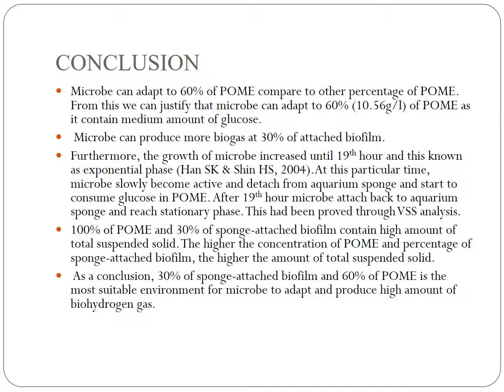As a conclusion, 30% sponge-attached biofilm and 60% POME is the most suitable environment for microbes to adapt and produce a high amount of biohydrogen gas. Microbes can adapt to 60% POME as it contains a medium amount of glucose, and microbes produce more biogas at 30% attached biofilm. The growth of microbes increased until the 19th hour, known as the exponential phase, after which microbes attach back to the aquarium sponge and reach the stationary phase.